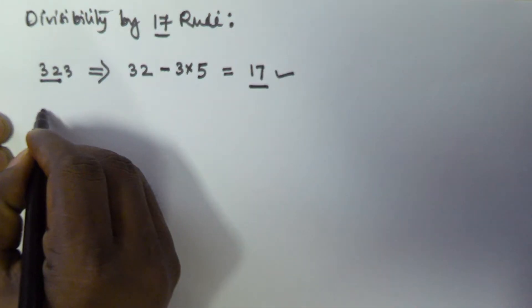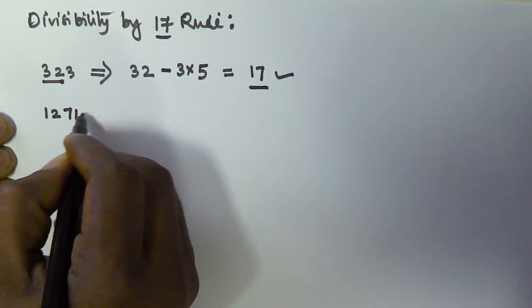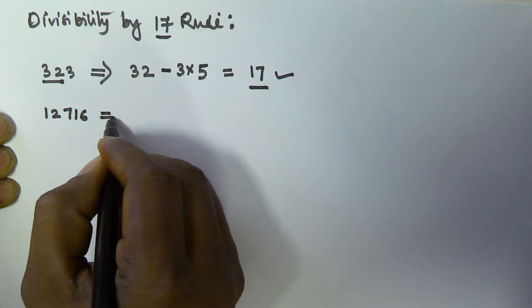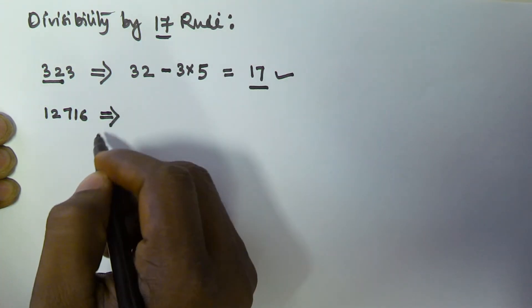Let's see another example: 12716. We have to check if this number is divisible by 17 or not.